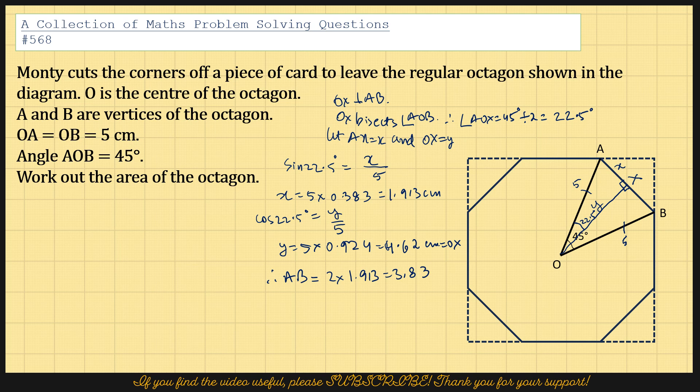So therefore, area of triangle AOB would be half multiplied by the base, which is AB, or 3.83, multiplied by the height, which is 4.62. So that would be 3.83 multiplied by 4.62, and then divide it by 2. And you get 8.85.